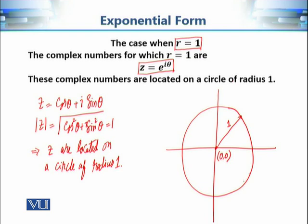Now let's find some particular values of complex numbers lying on this unit circle. When theta is 0 (or 2 pi), we get the complex number 1, which equals e raised to power iota times 0. When theta is pi by 2, the complex number is i, equal to e raised to power iota pi by 2. When theta equals pi, the complex number equals minus 1, which is e raised to power iota pi.